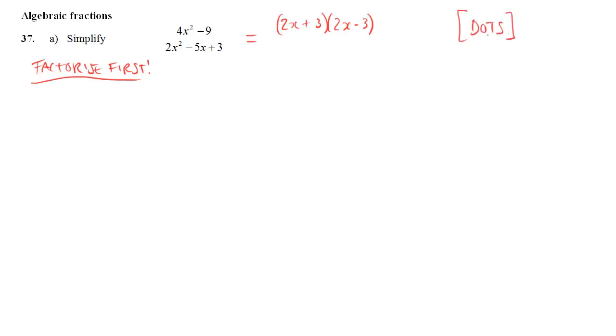2x plus 3 times 2x minus 3. And if you need to, you might have to go and revise the difference of two squares a little bit. But now this gives us a clue. Because we're asked to simplify, I know that something is going to cancel here, which means I know that one of my brackets on the bottom is either going to be 2x plus 3 or 2x minus 3.